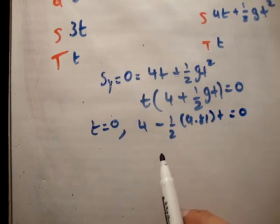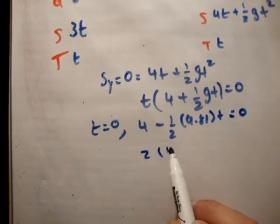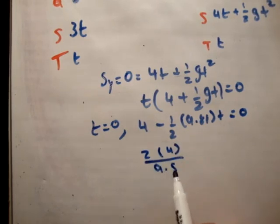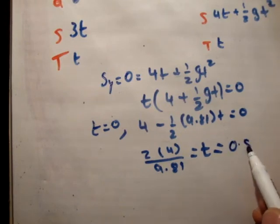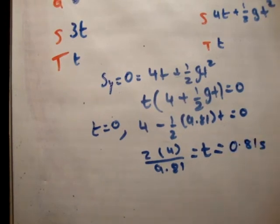So where I put in g, let's do this. So if 2 times 4 over 9.81 is equal to t, let's pull out my calculator. So 8 divided by 9.81 is equal to 0.81 seconds. Just check that out. Correct. So that time is correct. 0.81.